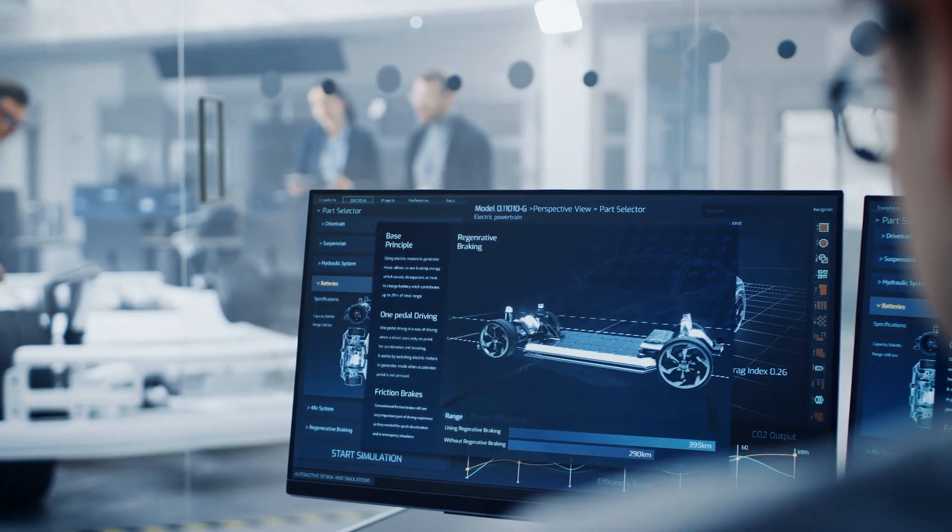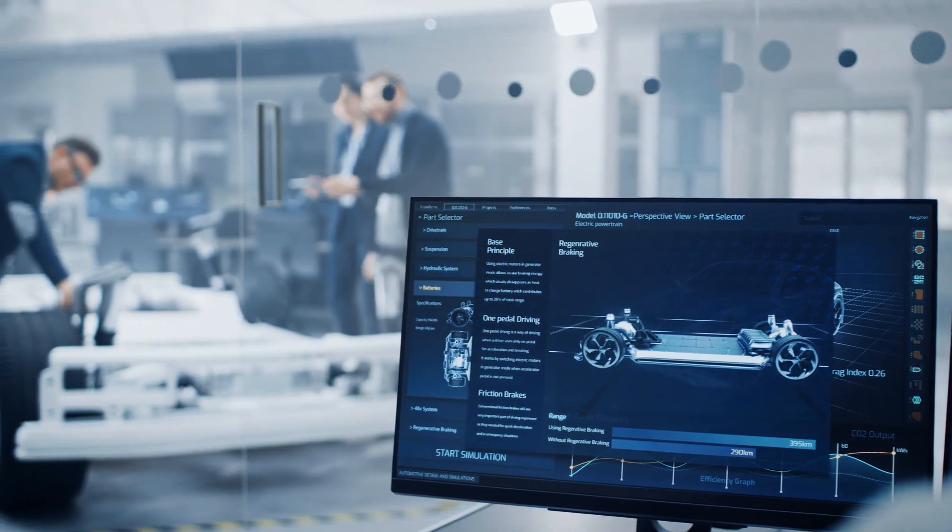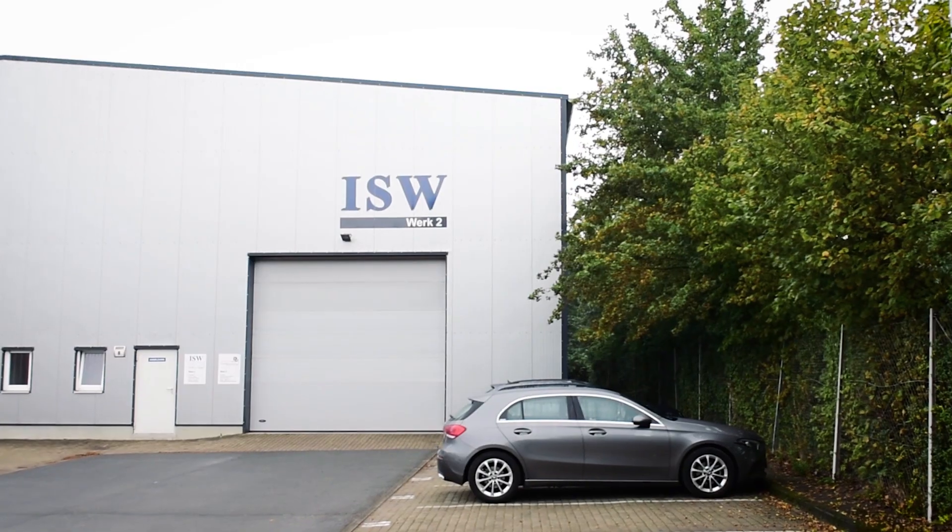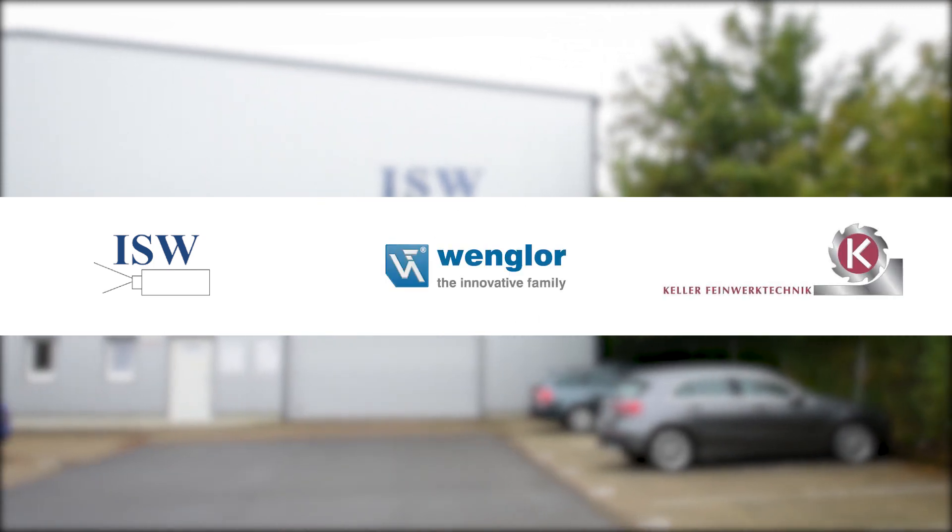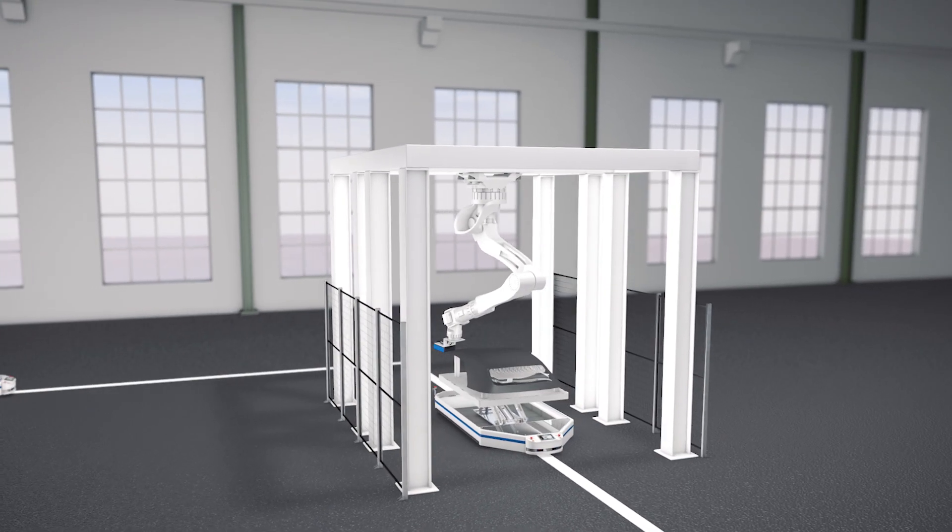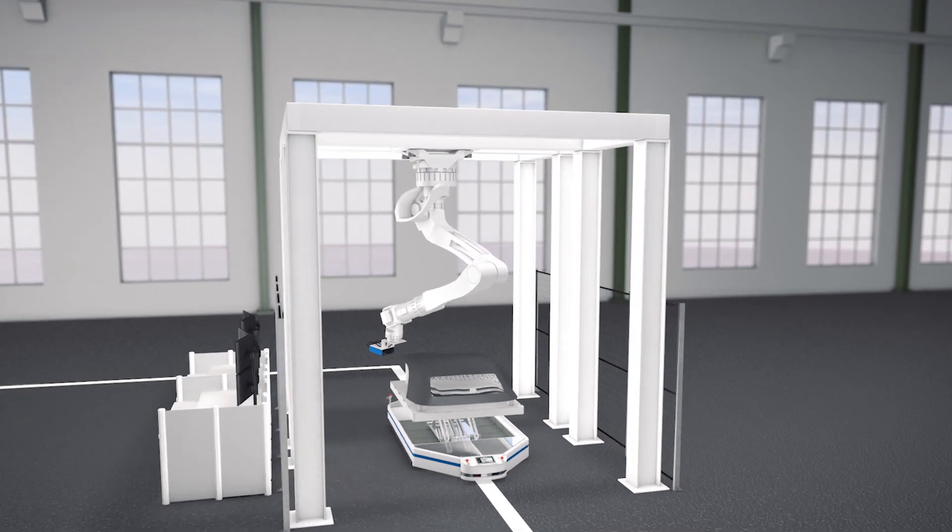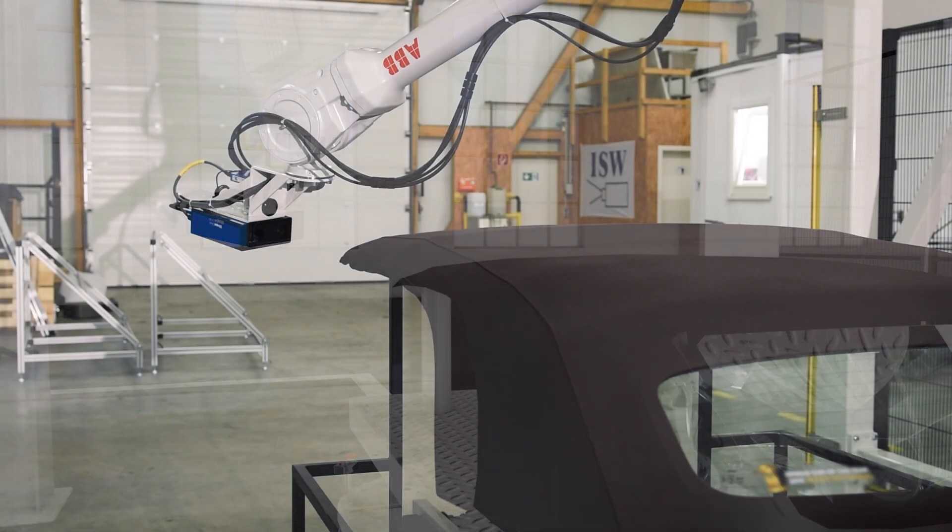Here the large automotive suppliers rely on specialists in industrial image processing and automation such as ESV, Wengler Sensorik and Keller Feinwerktechnik. Together these companies supply the perfect complete solution consisting of robot cells, 3D sensors, software, interfaces and control systems.